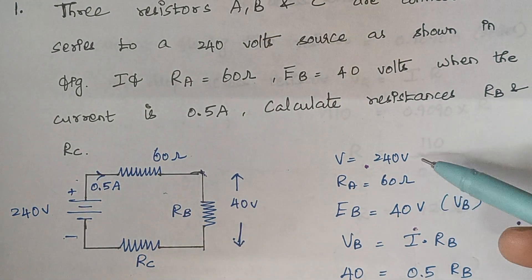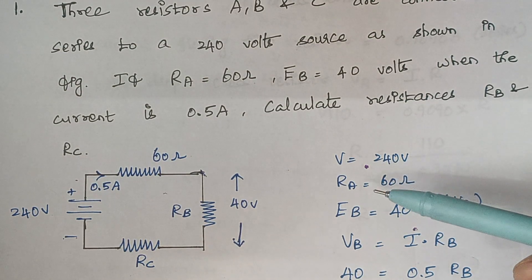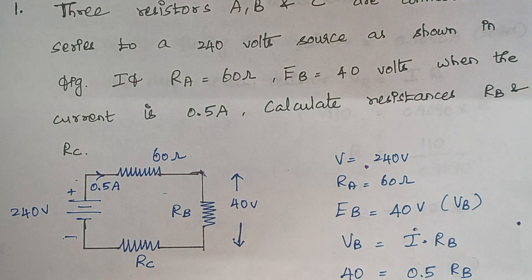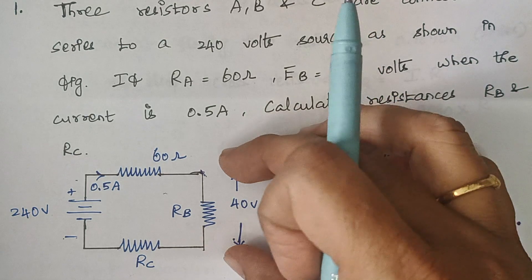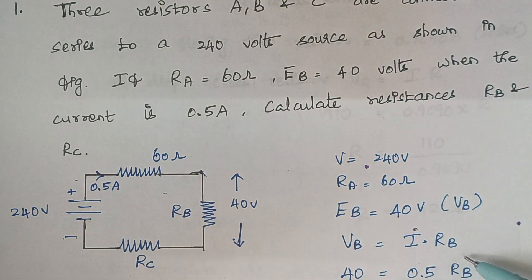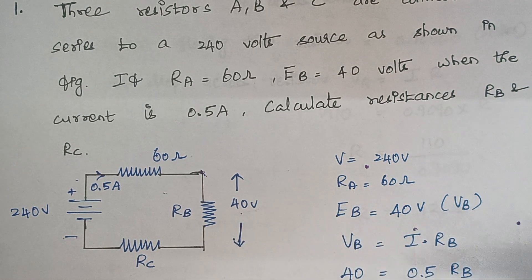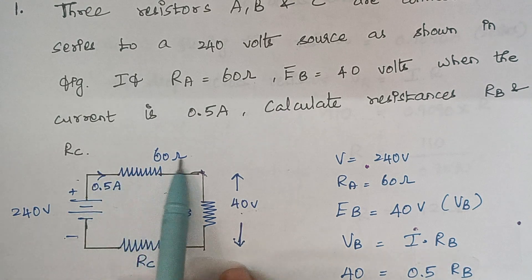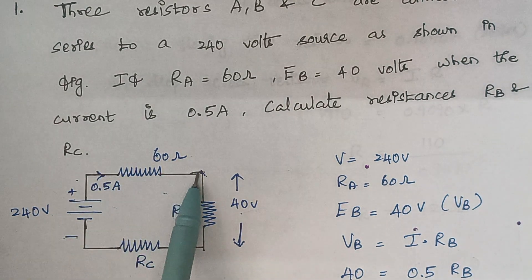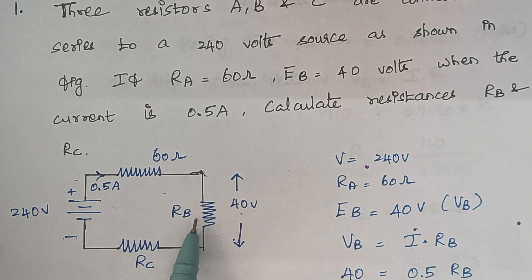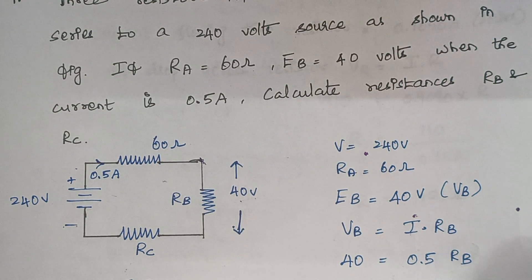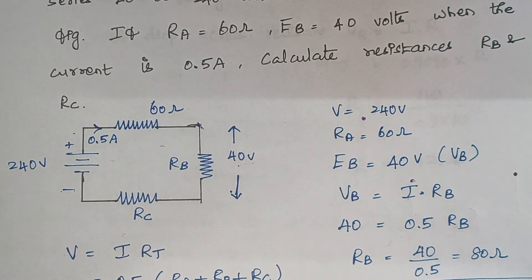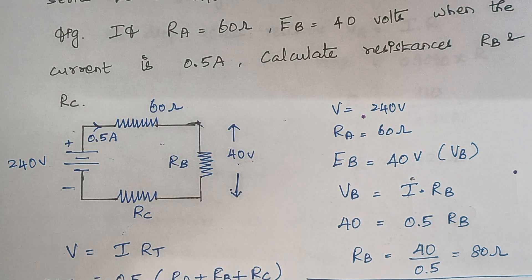First, list the given data: RA, VB, and current I = 0.5 amps. The voltage drop across RB is written as VB = I × RB. VB is given as 40 volts. Since this is a series circuit, the same current flows through all resistors, so the current through RB is 0.5 amps. Substituting: RB = 40 ÷ 0.5 = 80 ohms.